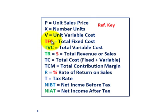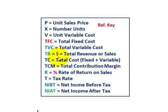TFC equals our total fixed cost. TVC equals total variable cost. TR and S represents our total revenue or sales. TC is our total cost, which includes both the fixed and variable portions. TCM equals our total contribution margin.